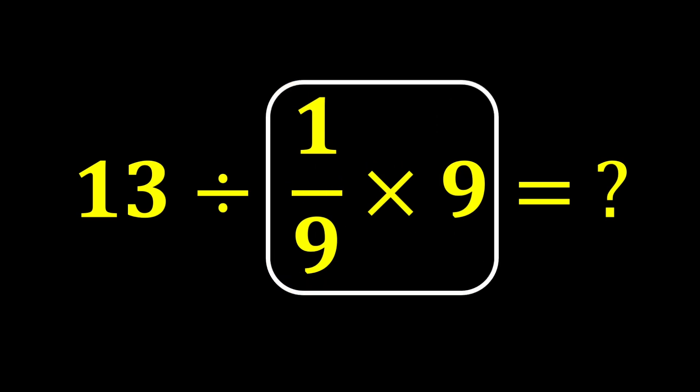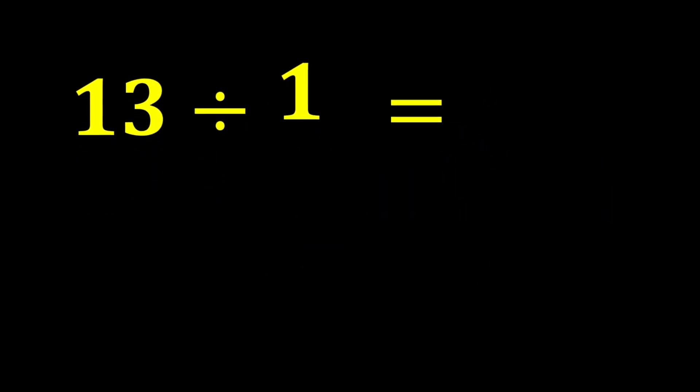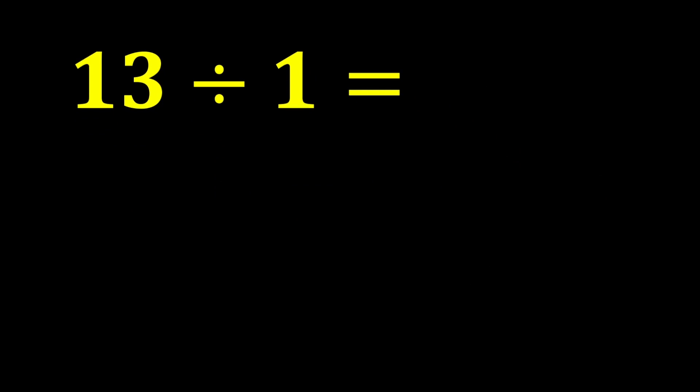First, we do this multiplication, 1 over 9 multiplied by 9. Easily, we cancel this 9 with this 9, and only 1 remains. In the end, 13 divided by 1 gives us 13.